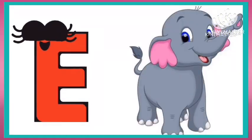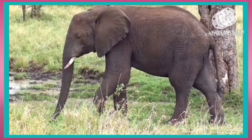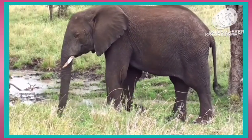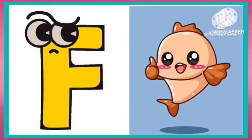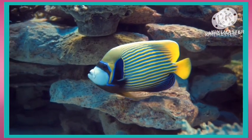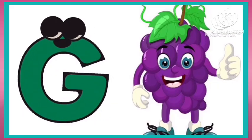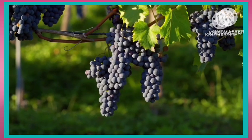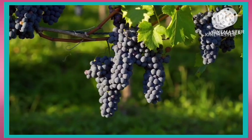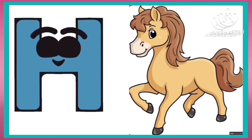E is for Elephant. F is for Fish. G is for Grapes. H is for Horse.